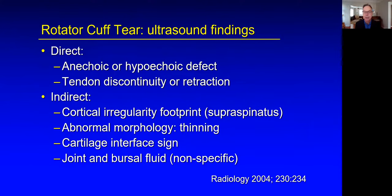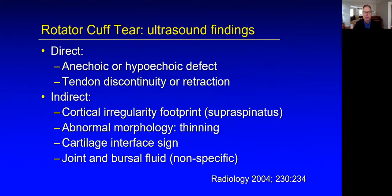What do we look for for rotator cuff tears by ultrasound? The direct findings would be a defect, either hypoechoic or anechoic within the tendon, or possible tendon discontinuity or retraction. Very important indirect signs — the first two are the most important: cortical irregularity at the supraspinatus footprint, and abnormal morphology of the tendon meaning thinning of the tendon, implying fiber loss. Also the cartilage interface sign, and fluid in the joint or bursa. I'll talk about the cartilage interface sign in just a moment.